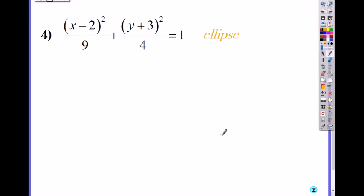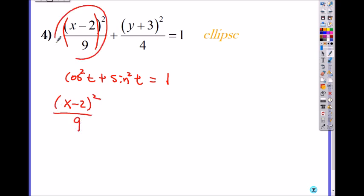So here, when we convert the ellipse to a parametric equation, you have plus, so I'm going to use the identity cosine squared of t plus sine squared of t equals to 1. So that means x minus 2 squared over 9, this equals to cosine squared of t.